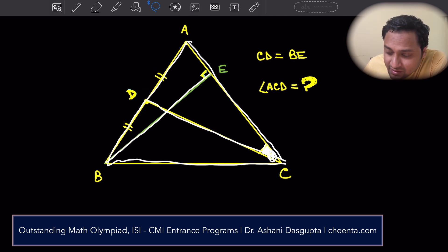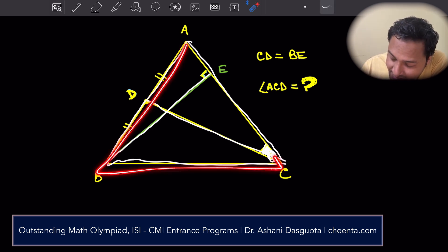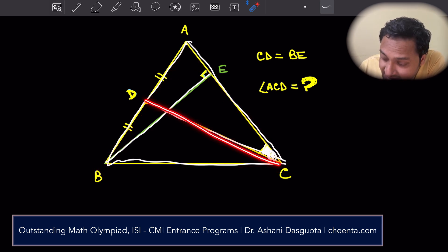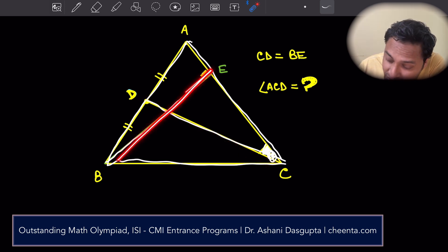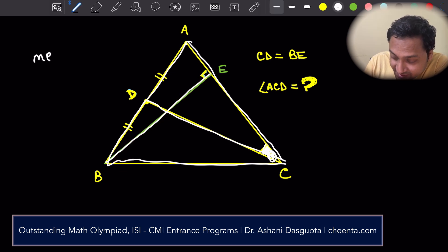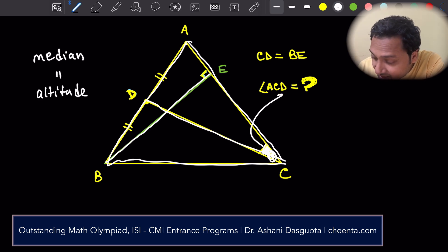We will learn this using a problem from geometry which came up in ISI B.Stat-B.Math Entrance. The problem says that we have a triangle ABC, any triangle, and the median CD. Median CD is equal to the altitude BE. It's a very interesting scenario - median is equal to the altitude. And we are interested to know the angle ACD, the value of angle ACD.